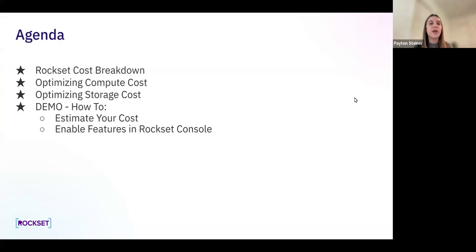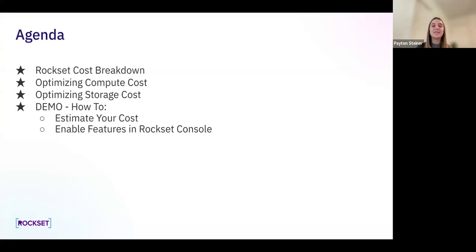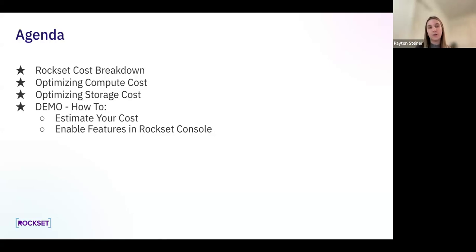The agenda for today is: first we're going to go into the Rockset cost breakdown to see how cost is actually determined in Rockset. This consists of compute and storage. We're going to go into optimizing compute cost and some features we have. Then we'll discuss how to optimize storage costs. And lastly, we'll finish with a quick demo showing you how you can estimate your cost using our new pricing calculator on our website and also how you can enable features that we talk about today in the Rockset console. We've also shared the link to the slides in the chat, so please feel free to follow along.